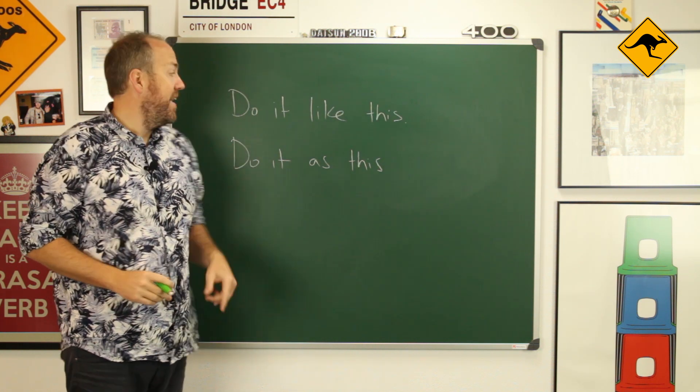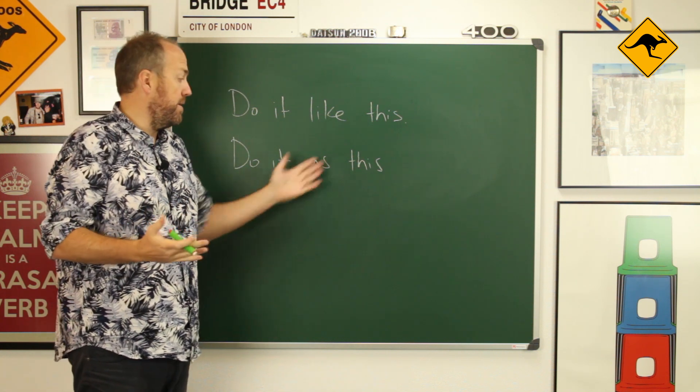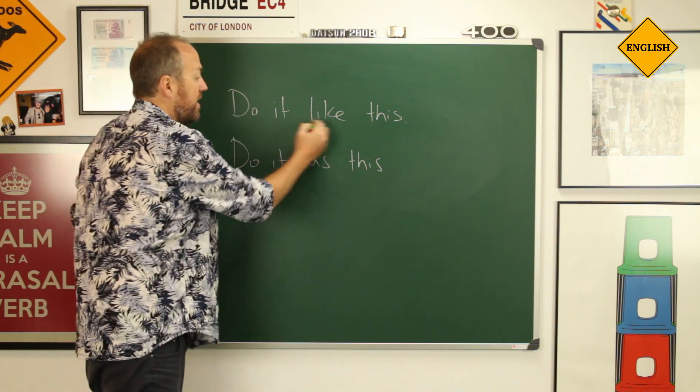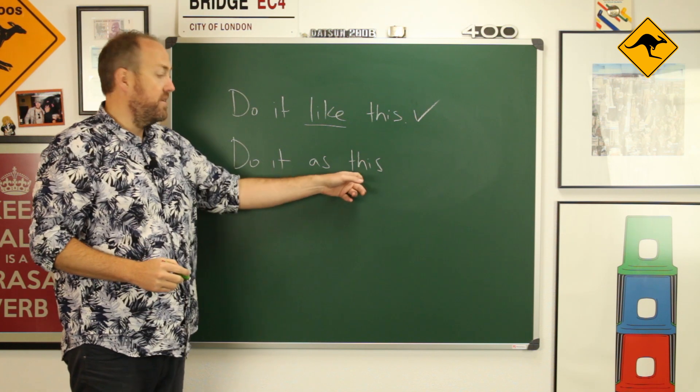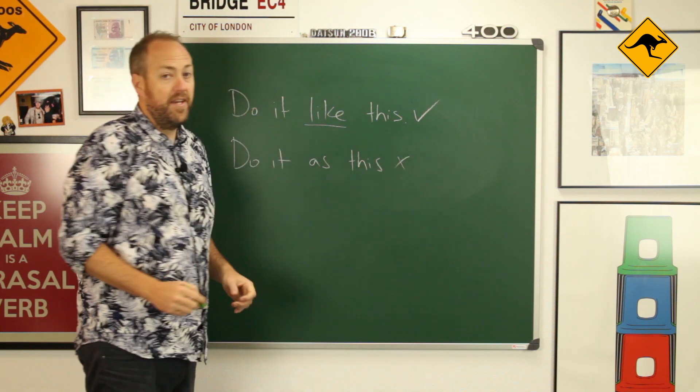But one final thing, as requires both a subject and a verb afterwards, but like doesn't. So in this case, do it like this, correct. But in this case here we don't have a subject and a verb so, incorrect.